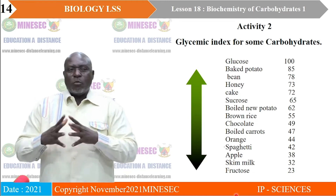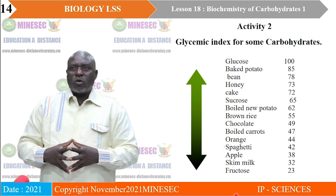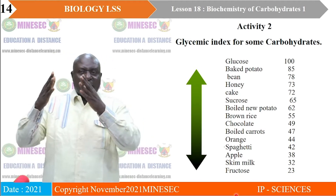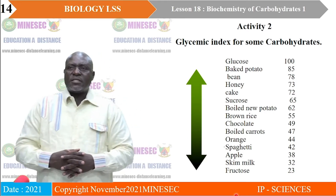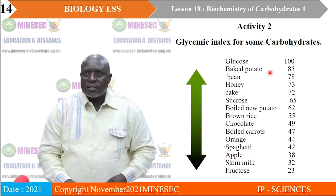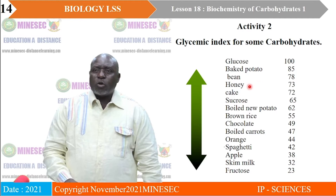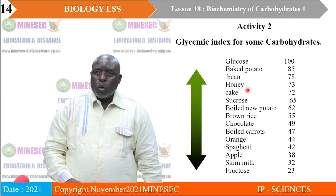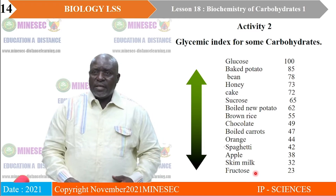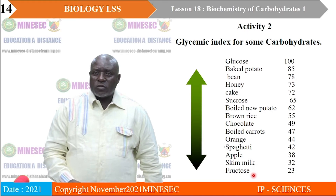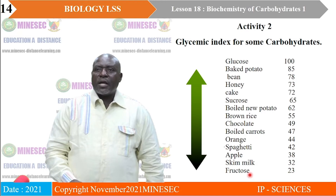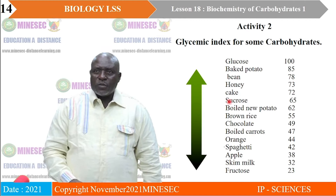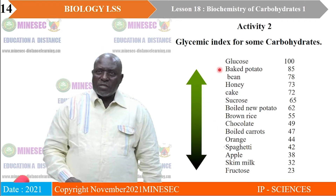The glycemic index is a chart that shows you which food has what glycemic level. For example, glucose has the highest glycemic level of 100 — when you eat glucose every day, your blood sugar content will be very high. Fructose has the lowest glycemic index of 23. Foods such as orange, spaghetti, apple, skim milk, and fructose are at the lower end of the glycemic index. There are high, medium, and low glycemic levels, and from this chart you can picture the carbohydrate content of what you are eating.